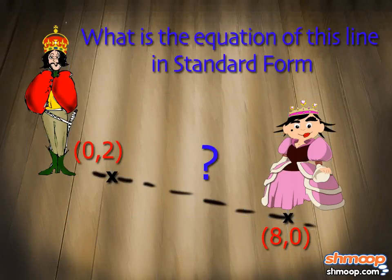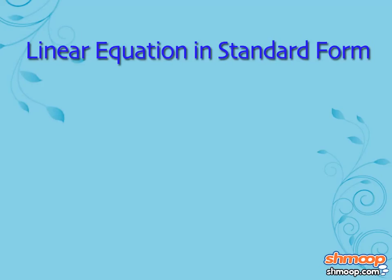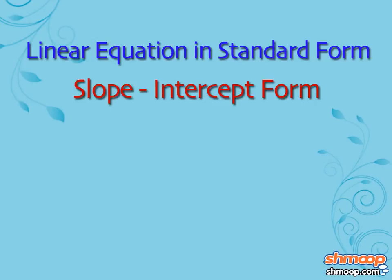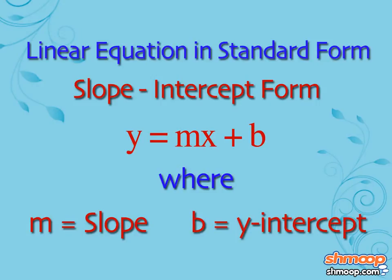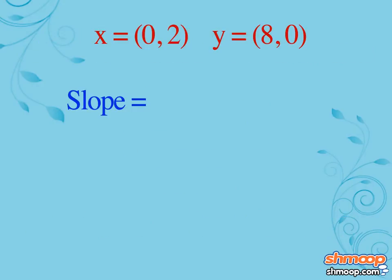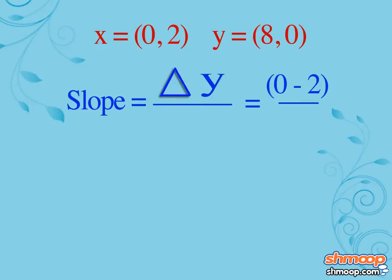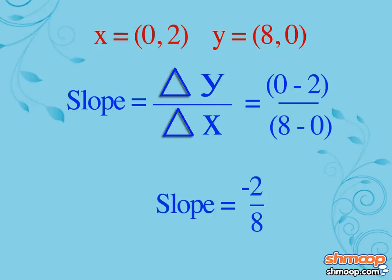What's the equation of this line in standard form? The easiest way to find the standard form of a linear equation is to go through the slope-intercept form, y equals mx plus b, where m equals slope and b equals y-intercept. The slope of the line is rise over run, or the difference in the y-values divided by the difference in the x-values. Slope equals negative two over eight, equals negative one over four.